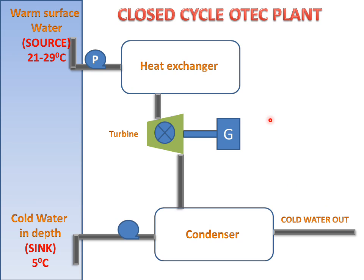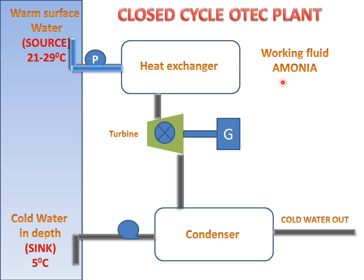Now we will see the animation. The working fluid in the closed cycle OTEC plant will be ammonia. Water will come from the surface and go to the heat exchanger, where heat exchange will take place with the working fluid ammonia, and ammonia will be converted into vapor.